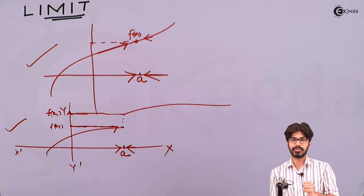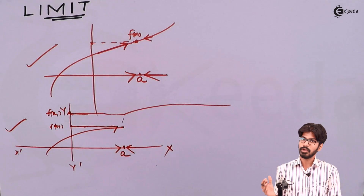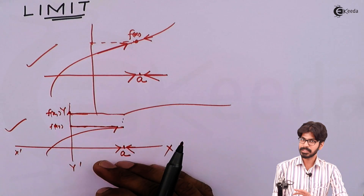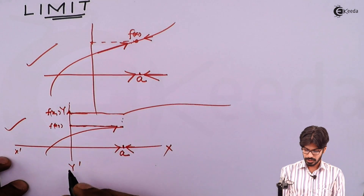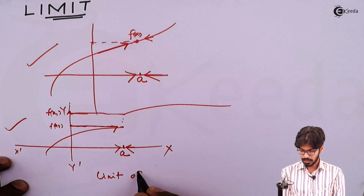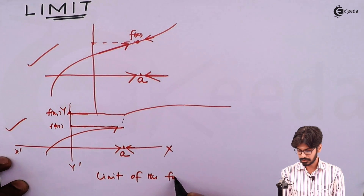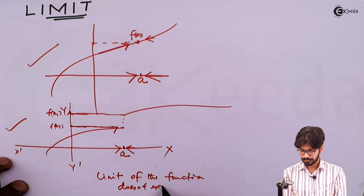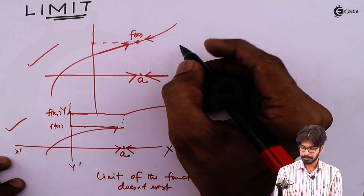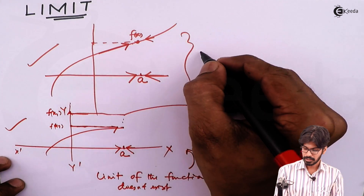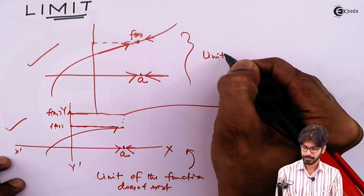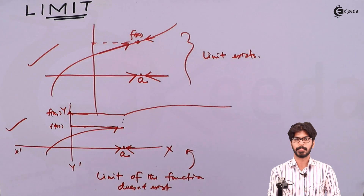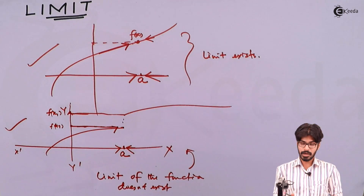Unlike the previous case, here f of X does not approach a fixed or certain value from both ends — it approaches some value from the left hand side and some other value from the right hand side. So when X approaches a, f of X does not approach a certain value. In this case we can say that the limit of the function does not exist. In the first case, the limit exists.